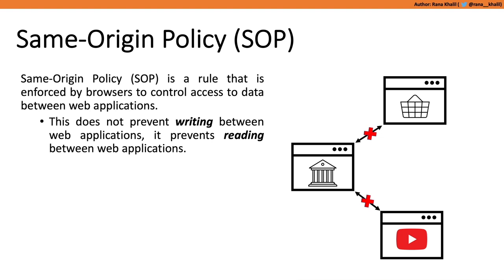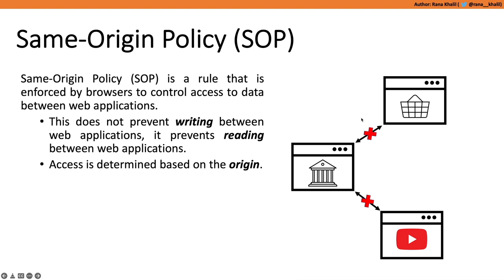If there's no same origin policy, your banking website would hand over that information. That's why it's really important to have a control like the SOP — without it, all applications can pretty much attack each other and access each other's data. Now there's a really important distinction: the SOP does not prevent writing between web applications, it prevents reading between web applications. So the malicious shopping application can still make a request to the banking application, but the browser will reject the response based on the origin of the request.